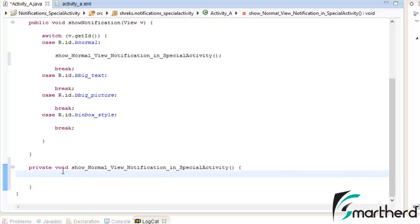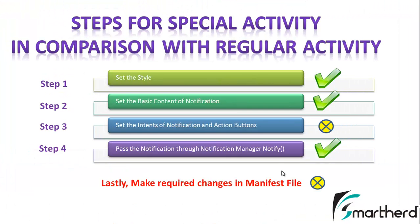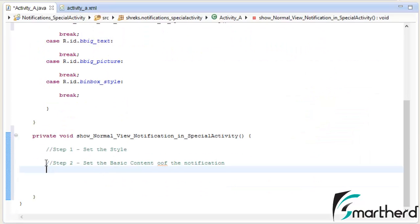Now what was our first step? Our first step is to set the style and the second step is to set the basic content of the notification. Since this is a normal view notification, we don't require to set the style. So we have to follow from the second step onwards: set the basic content of the notification. Let us write the code for step number 2.